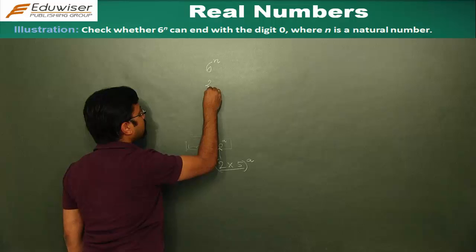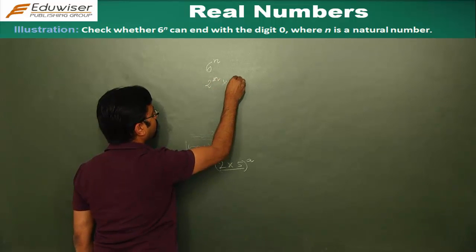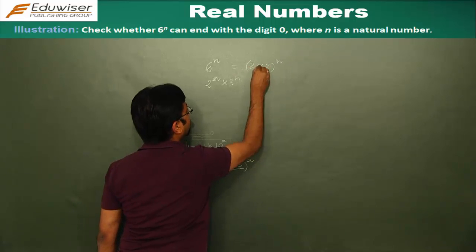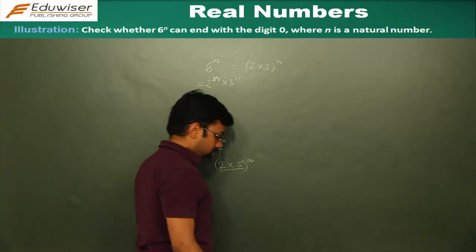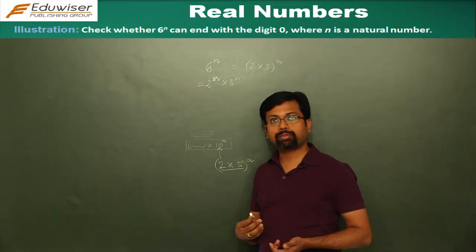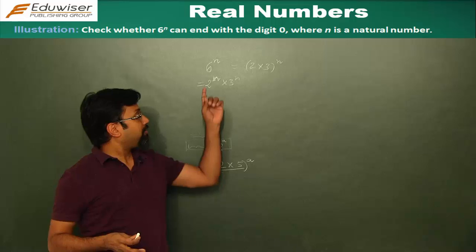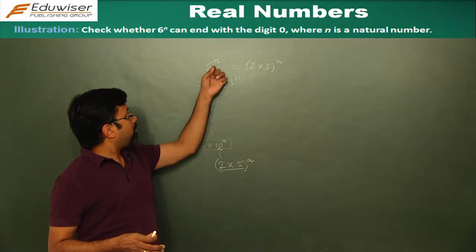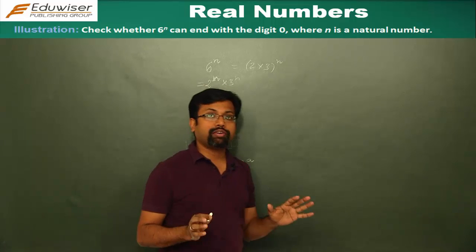So 6 to the power n is 2 to the power n into 3 to the power n. Because 6 can be written as 2 into 3 to the power n and you then open the bracket. So you have 2 to the power n into 3 to the power n. Both are prime factors and from fundamental theorem of arithmetic, we know that the order of prime factors might change but the prime factors are going to remain unique. So for 6 to the power n, the prime factors would always be 2 and 3. There is no 5 here.